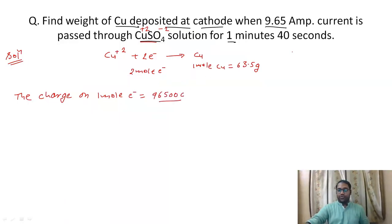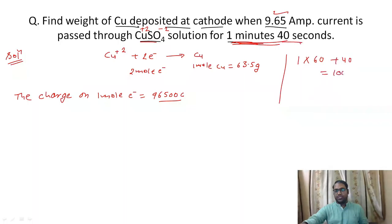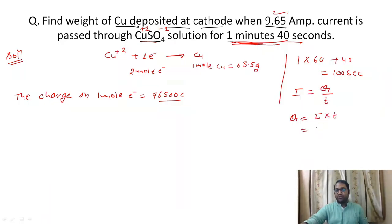First we have to convert the current and time into charge. We convert the time: one minute and 40 seconds equals 60 plus 40, which is 100 seconds. From physics, current equals charge divided by time, so charge equals current multiplied by time. Here current is 9.65 amperes and time is 100 seconds, so charge equals 965 coulombs.